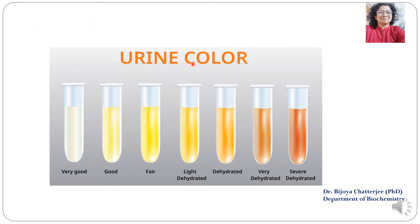Urine color can be indicative of a person's hydration status. In a normal person, urine may range from almost clear/white to very dark yellow, and this is an indication of hydration status. As the color darkens, the hydration status becomes poorer.